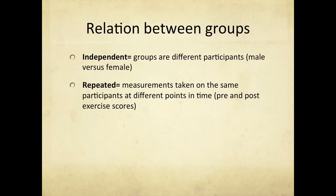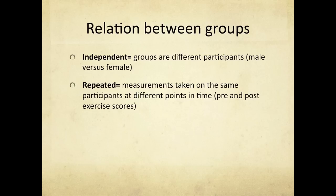We also need to consider what the relationship is between those two groups. We could have two independent groups — for example, male and female, where you can only belong to one group. Alternatively, we could have repeated groups, where we take the same group of people and measure them at two different time points. For example, a study of an exercise intervention measuring VO2 max before and after the intervention would be a repeated measures design — and this is important to which statistical test we select.